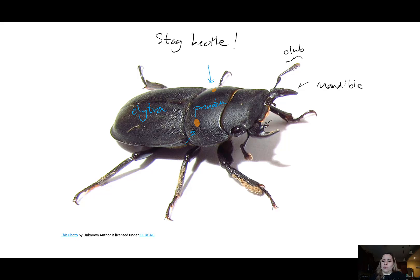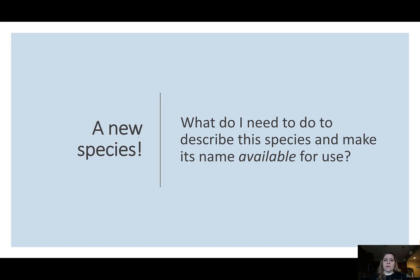I think this is a new species and those orange dots are unique. What do I need to do to describe this species and make its name available for use? I have to describe it following a set of rules that fit the code. If done properly, the name then becomes available — that is an actual term used in the code, meaning the name can now be used by other scientists. Before it's published, the name is unavailable.